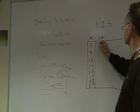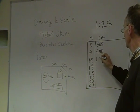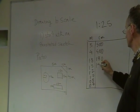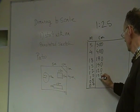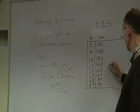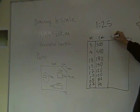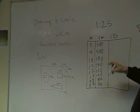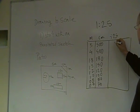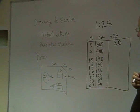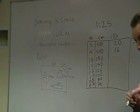In centimeters, this gives me 500, 400, 180, 150, 120, 100, 80, and 70. For the next column, I divide by 25. 25 into 500 goes 20 times, into 400 it goes 16 times, and for the rest of them I'm going to use a calculator.